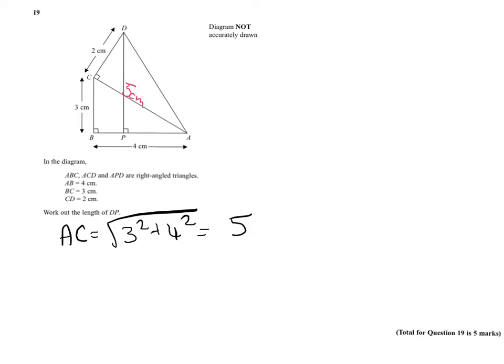At this point, we now have another right-angled triangle, ACD, so we can work out the length of AD.